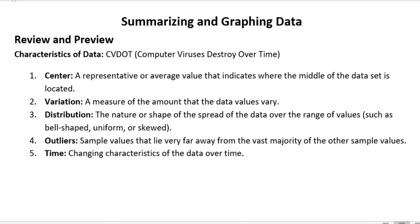Then we have outliers. Outliers are sample values that lie very far away from the vast majority of other sample values. Outliers can cause the data to skew, so sometimes if we have a set of data and we've got some extreme outlier, we may throw it out.